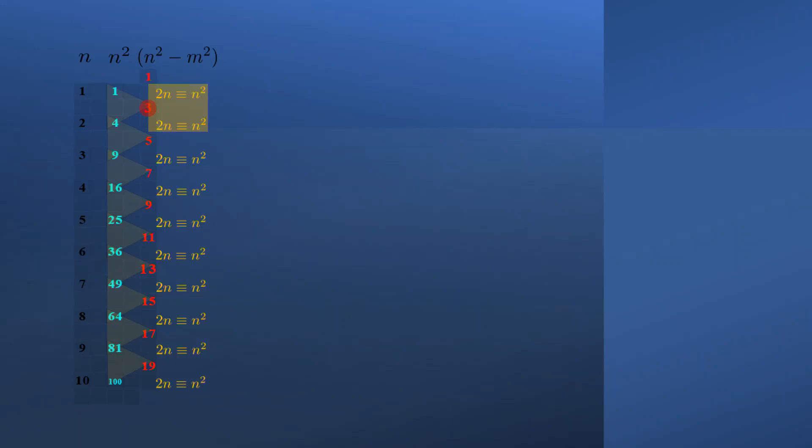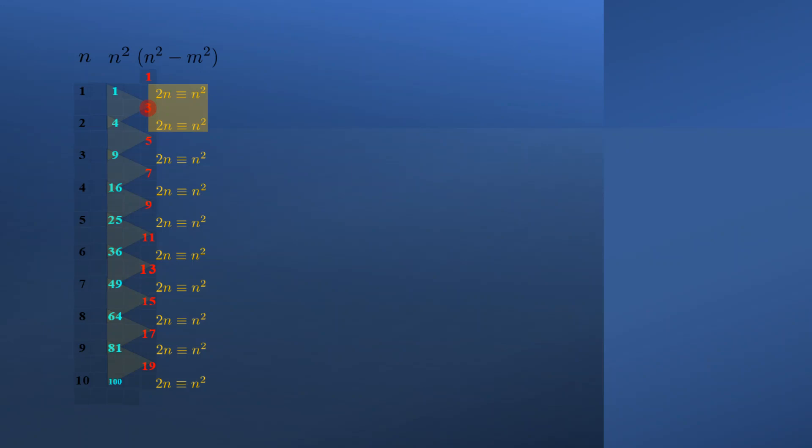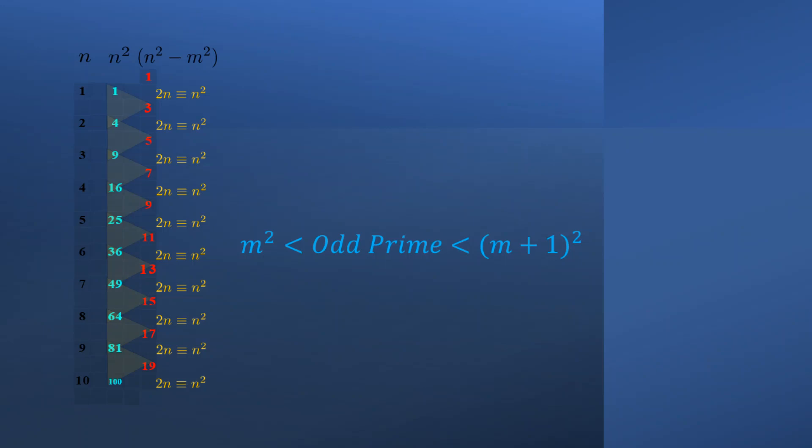Now using our number line as visual evidence, along with our power rule of exponents where n squared is equivalent to 2n, starting with 3, it is easy to see that all odds are bracketed by a set of squares in addition to being bracketed by a set of even integers. Therefore, Legendre's conjecture is true for all odd integers algebraically, but not necessarily operationally. We can say we have proven that all odd primes as odd integers will be bracketed by a set of consecutive perfect squares, m squared and m plus 1 squared, where m is some positive integer.